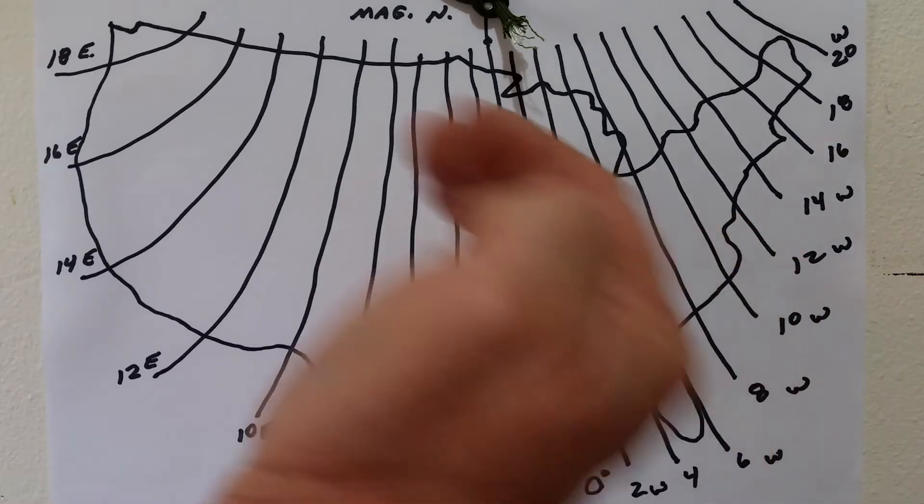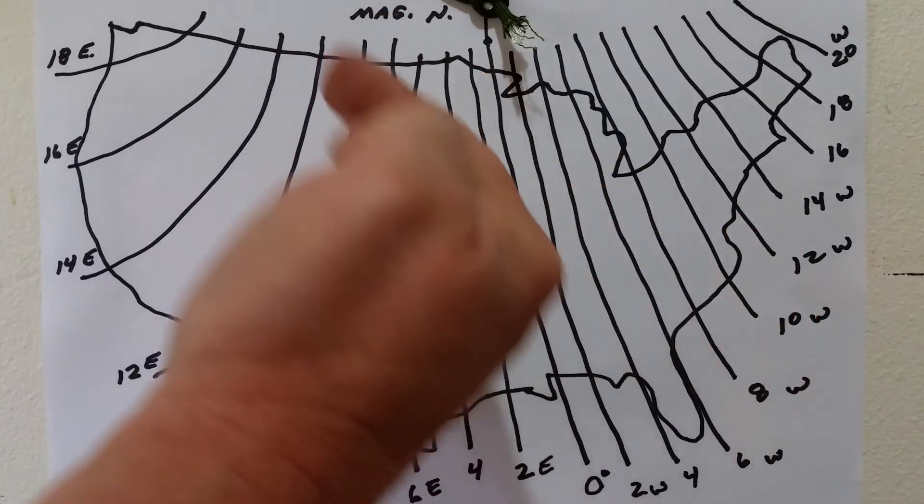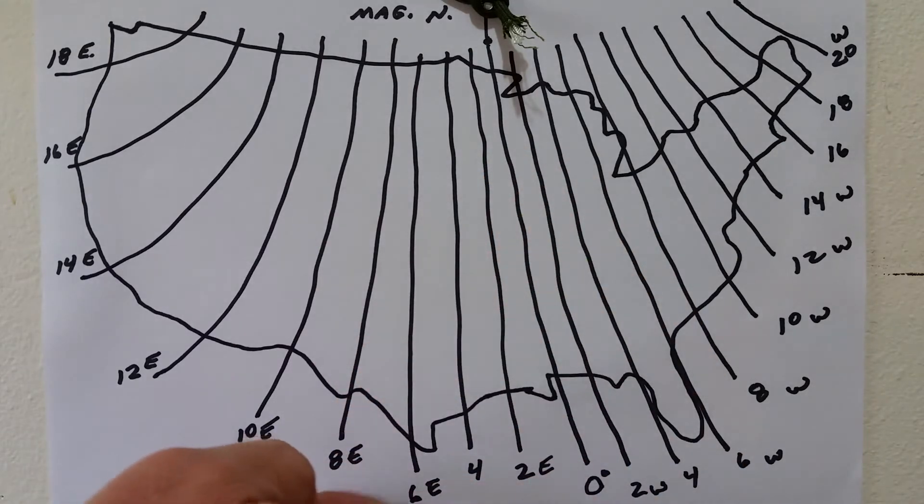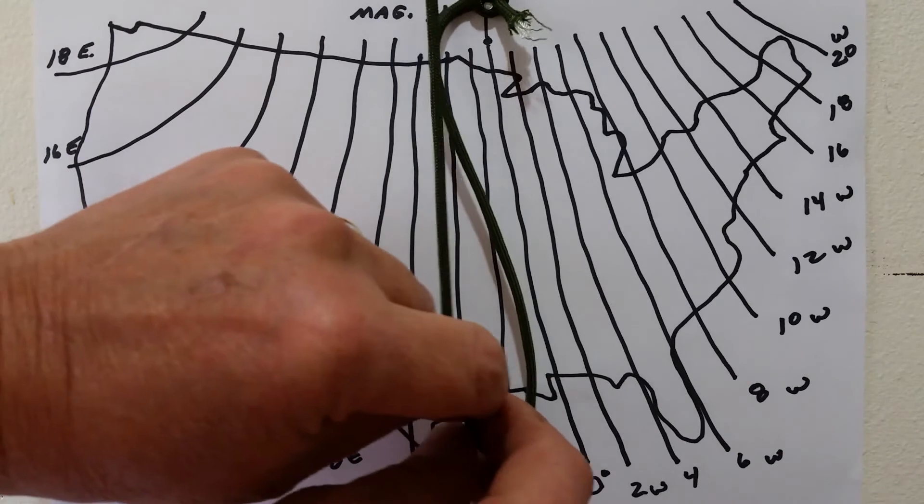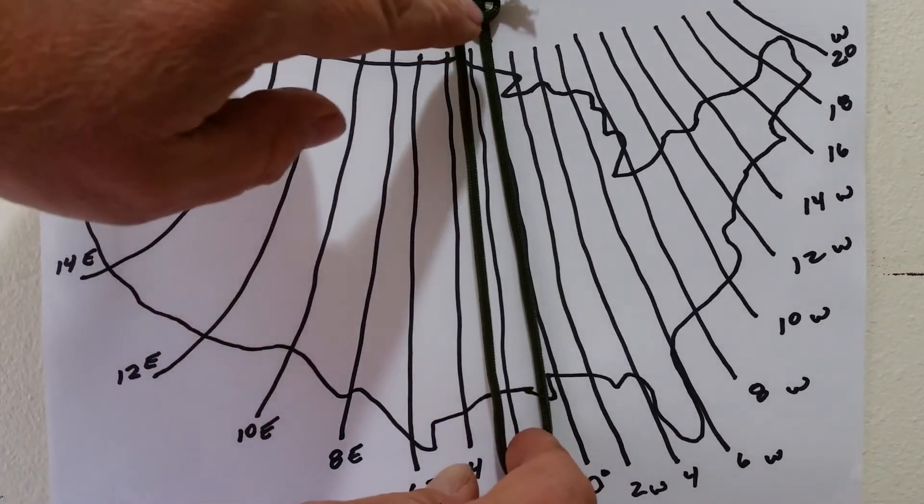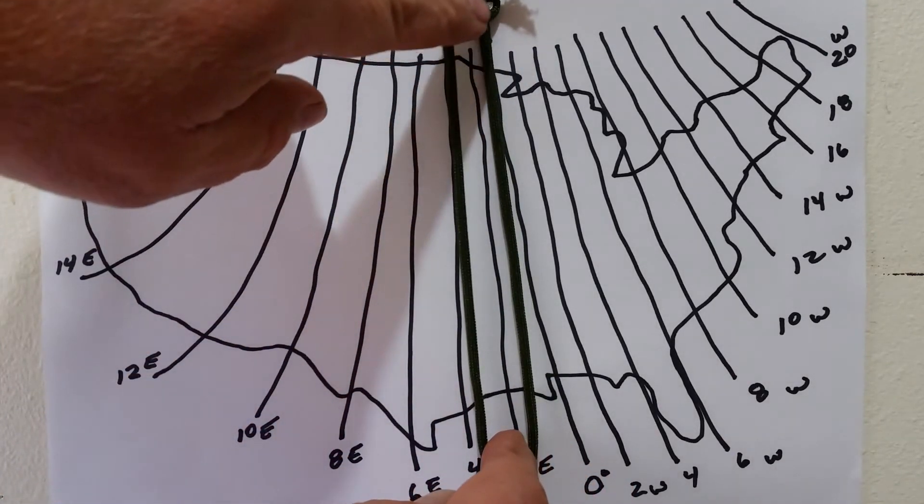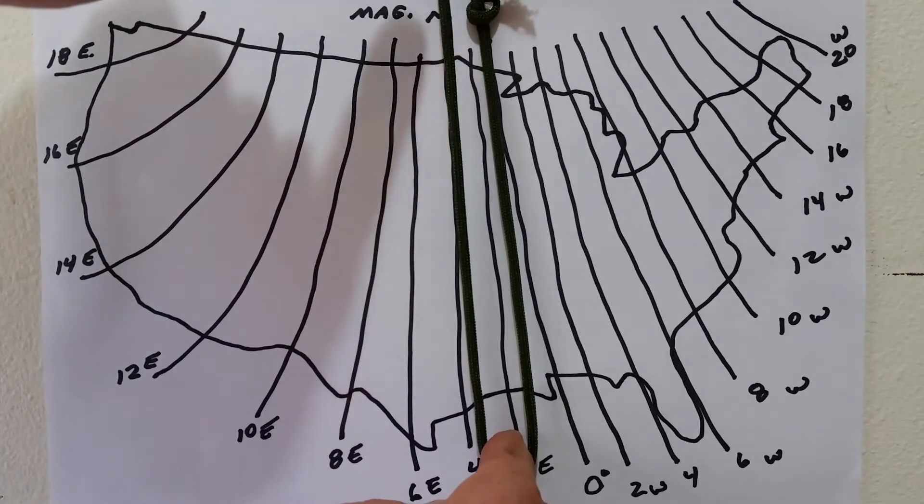So on the east side you have west declination because they are all heading toward the west side. So an easy way to do this to show you is here. Remember, this is not to scale.